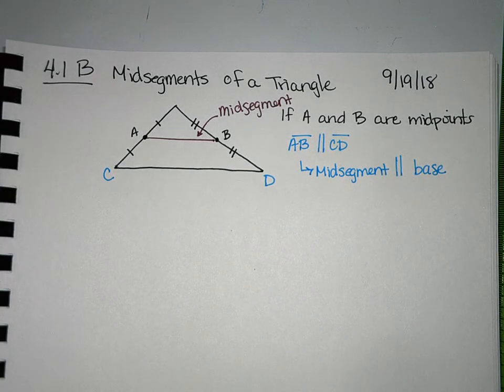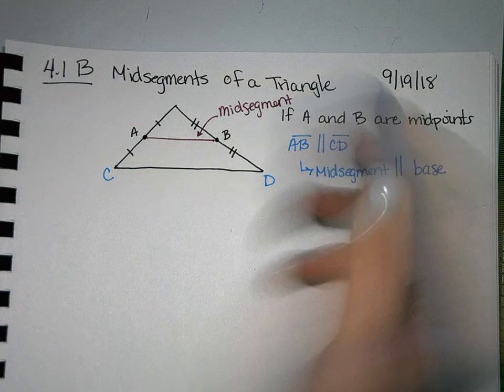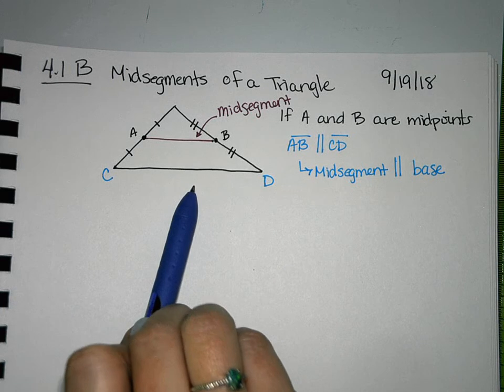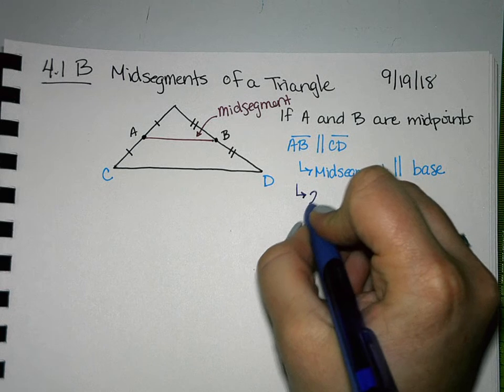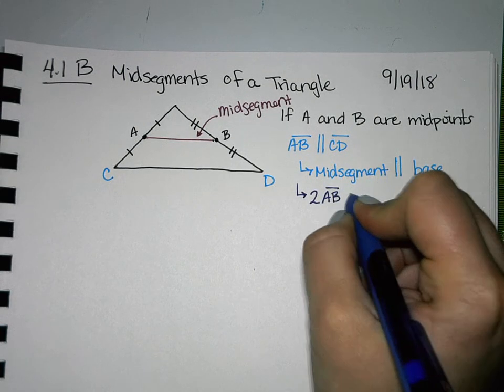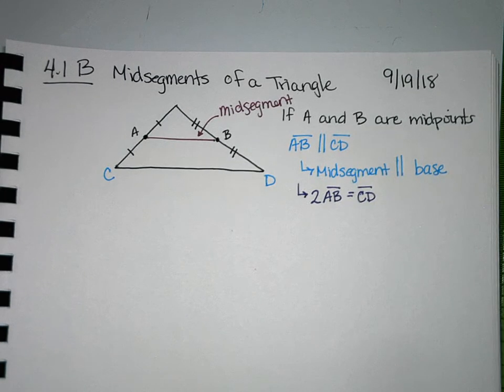That's one of our properties. And what our theorem tells us is that any midsegment is going to be parallel to the base. There's another relationship that has to do with the length of AB compared to the length of CD. That relationship is if you were to take 2 times AB, it will equal your third side, or your base, CD.